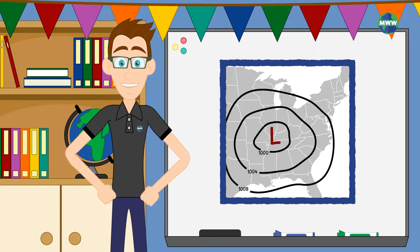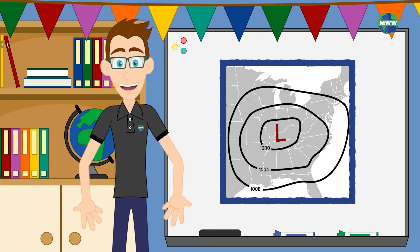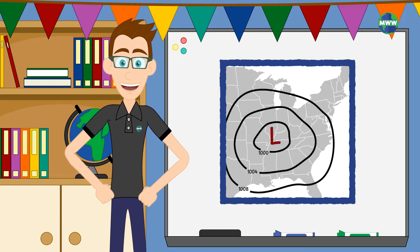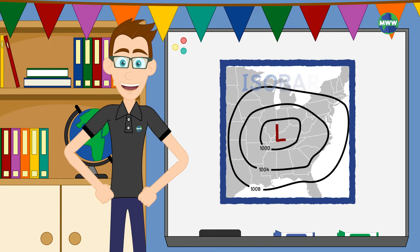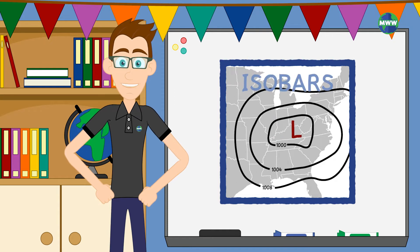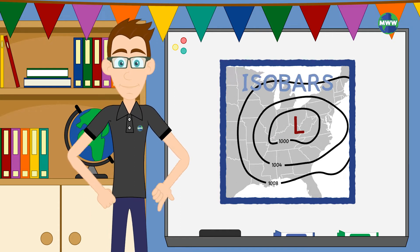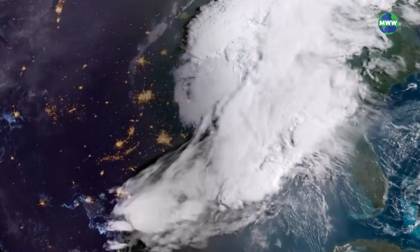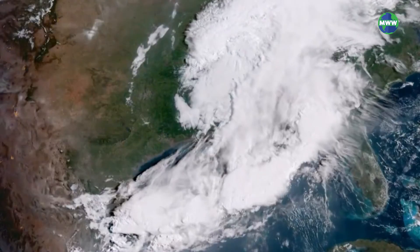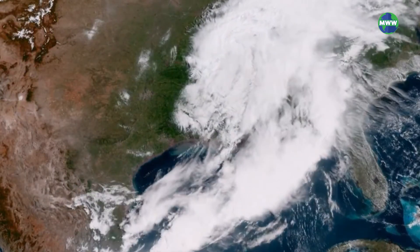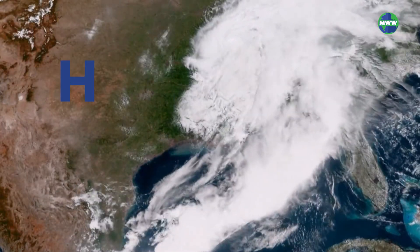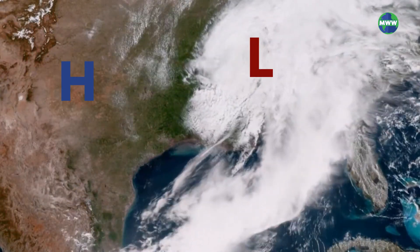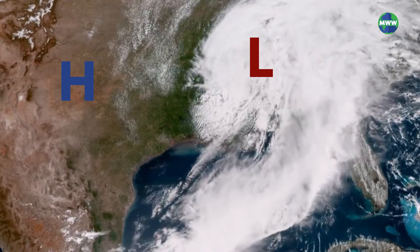Weather maps show air pressure at the surface using millibars. The lines that connect areas of equal pressure on a weather map are called isobars. Meteorologists refer to air pressure as being either high or low and show capital blue H's or red L's on their graphics.